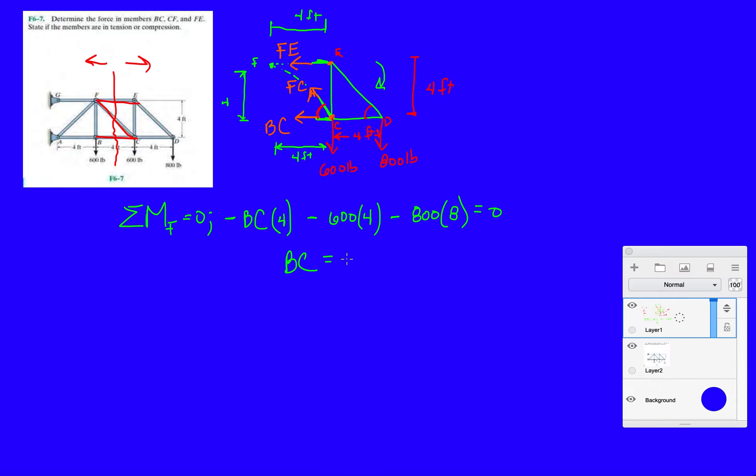This leaves me with BC equals four times 600 plus eight times 800 divided by four. That gives me a minus 2200, so 2200 pounds. Notice this negative over here. This negative is telling me that how I assumed BC was going to be in tension, BC is actually in compression. You can circle your answer like that.